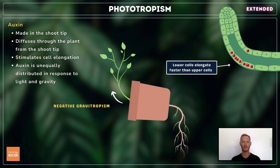If a plant is placed on its side in the absence of light, auxins accumulate on the lower side of the shoot due to gravity. As a result, the lower cells grow faster than the upper cells, causing the shoot to bend upwards.